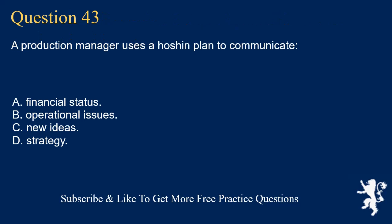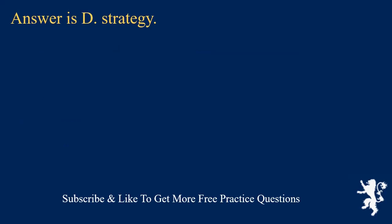Question 43. A production manager uses a Hoshin plan to communicate: A. Financial status. B. Operational issues. C. New ideas. D. Strategy. Answer is D. Strategy.